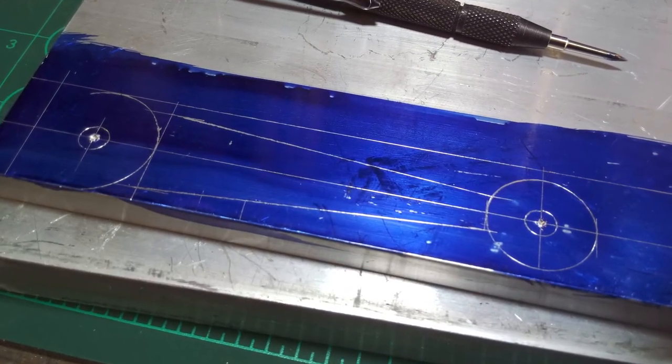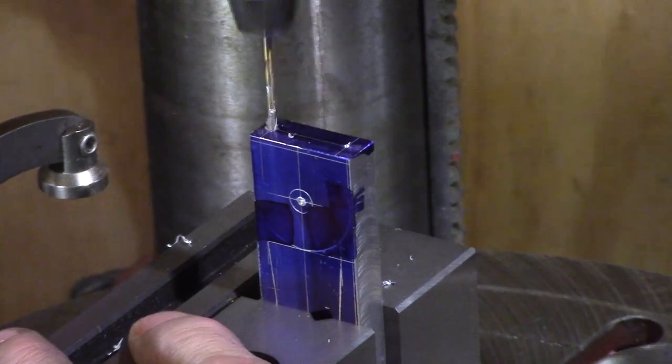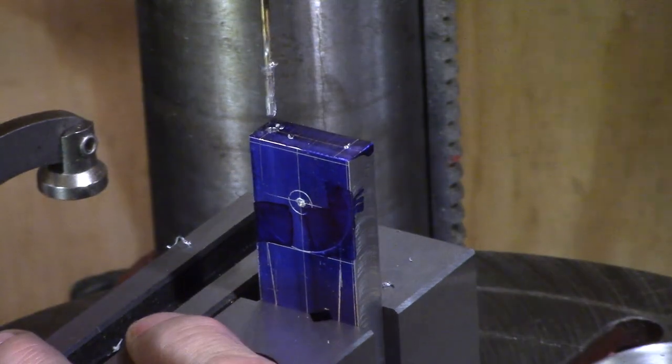Next up was the connecting rod. This was marked out and taken to the bandsaw for removal of excess material, and the base of the big end was drilled and tapped out.